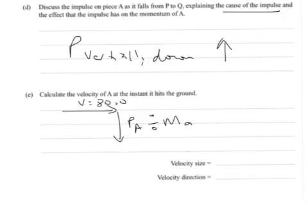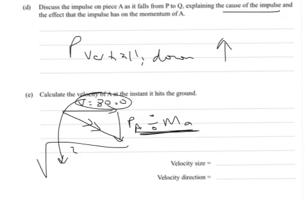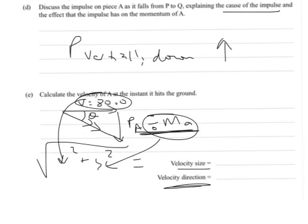And then all you need to do is find this part, which is just 80 squared plus whatever this part was squared, and then you square root the whole lot. So square root of V plus that squared plus that squared, and you square all of that. And that gives you velocity size.